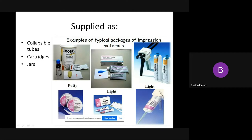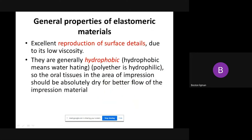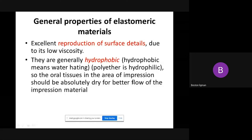All of them are rubber-based impression materials. They have some general properties. Number one, they are excellent — the best material for reproduction of detail. Why? Because of the low viscosity when compared to other previous materials. Number two, it is hydrophobic, meaning when you take the impression you don't need dryness of the mouth before taking the impression.